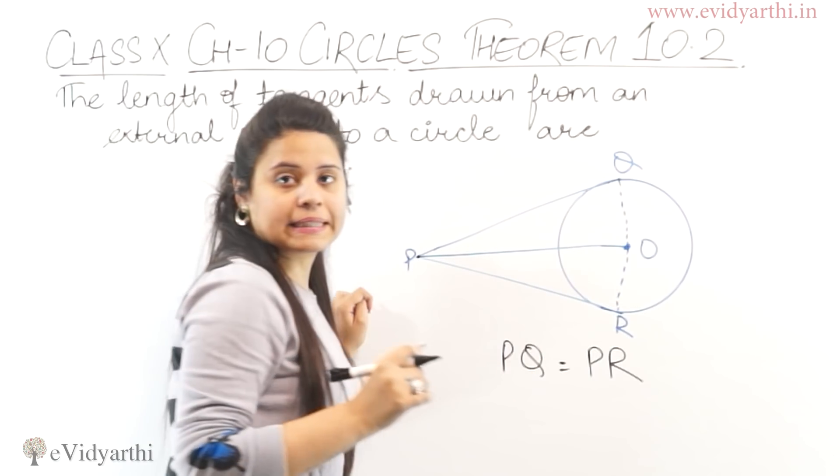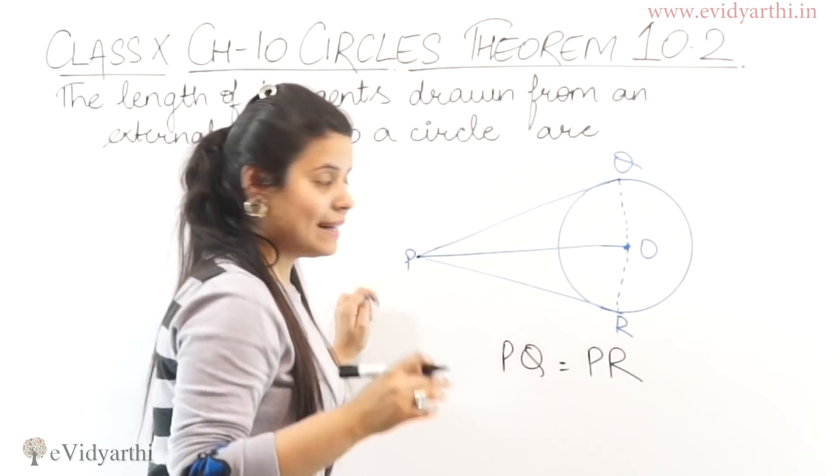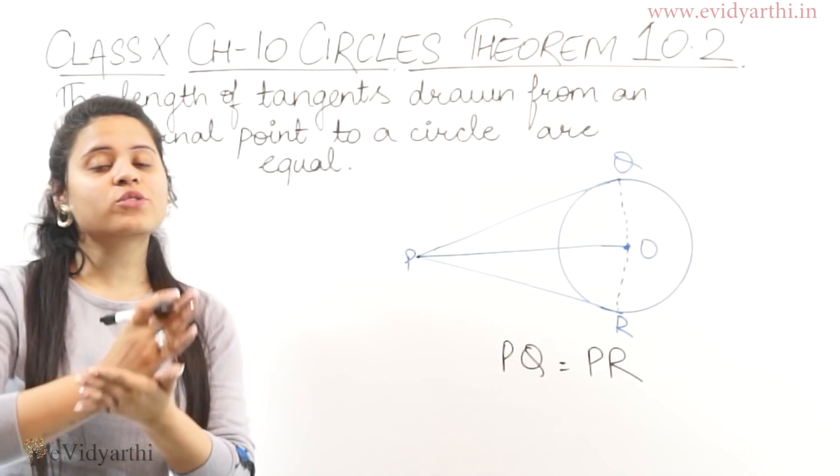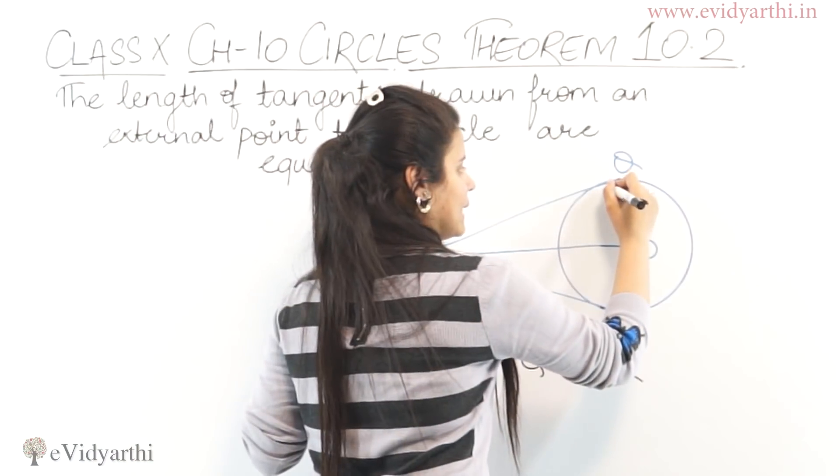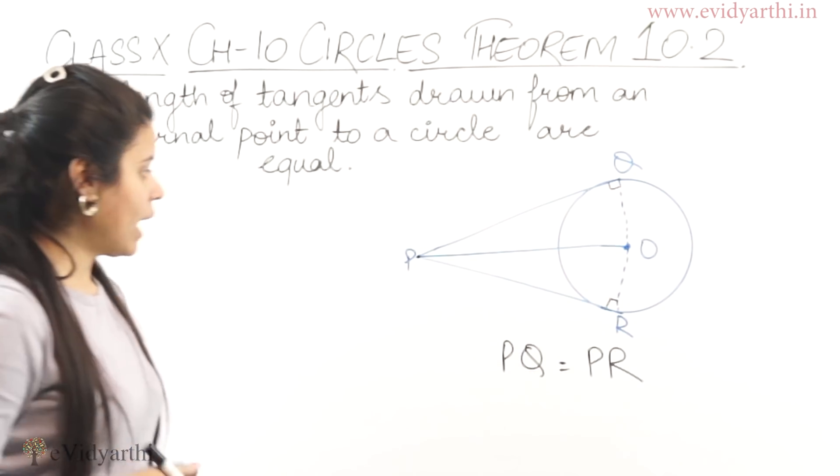This is the circle of radius. OQ is the radius of the circle. Similarly, OR is the radius of the circle. And in Theorem 10.1, we have found that the radius and the tangent are perpendicular. It means 90 degree angle. So this angle will be 90 degrees and this angle will be 90 degrees.